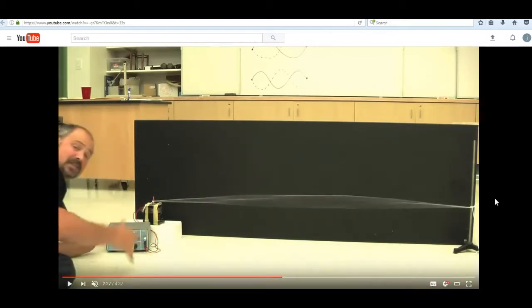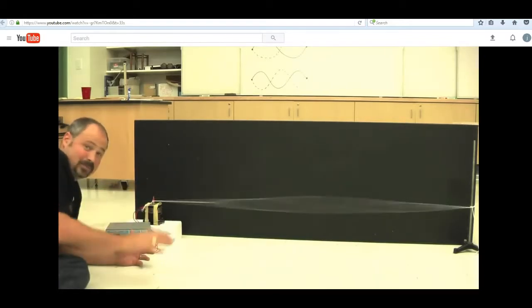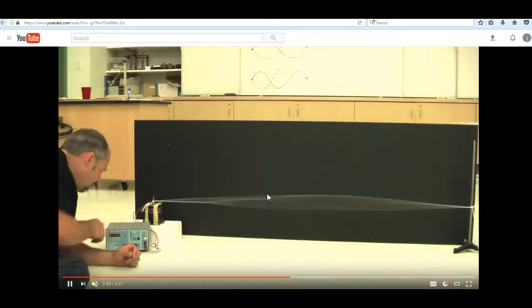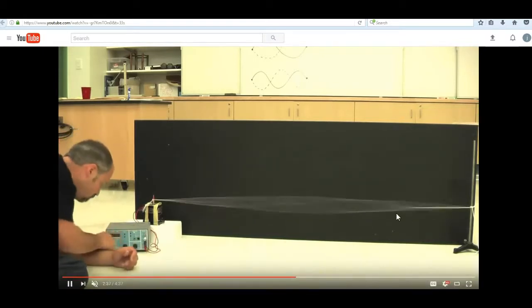There are different ways to vibrate this string. You can make it look different. And he's drawn some of the shapes on the board here. So this is a really long wave because you can only see half. You don't even see the other half where it goes up and also then goes down. So this is a huge wavelength.